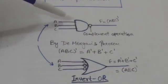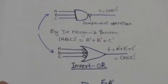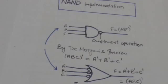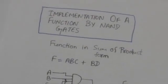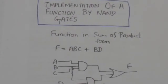A' plus B' plus C' equals the complement of A AND B AND C, which means this invert-OR gate is equivalent to the NAND gate.